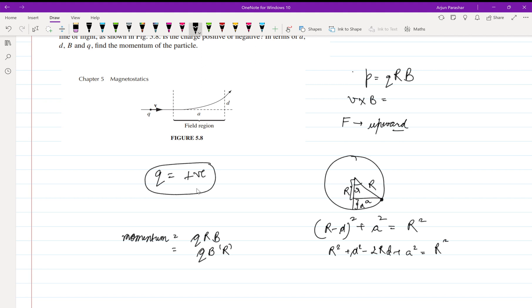So r came from here by calculation: d square plus a square upon 2d. This is the value of r in terms of a and d. Just putting the values: P equals qB times d square plus a square upon 2d. This is the momentum in terms of a, d, B, and q.